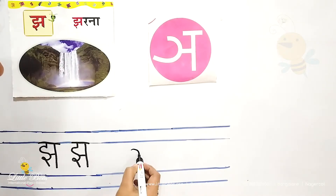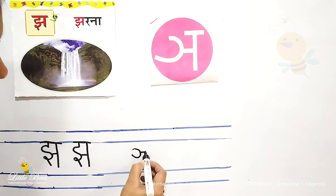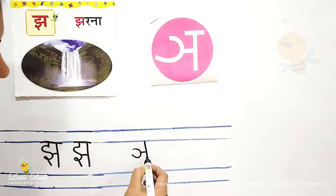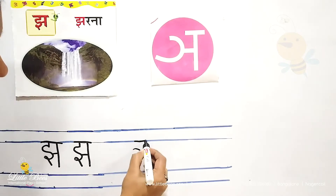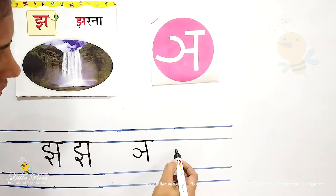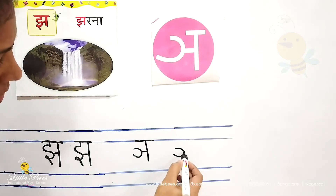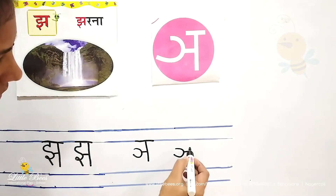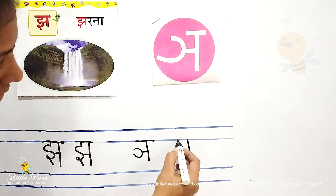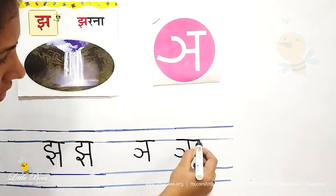Next is Iyan. Make a curve, sleeping line and a standing line. Once more: curve, small sleeping line and a standing line. Iyan.